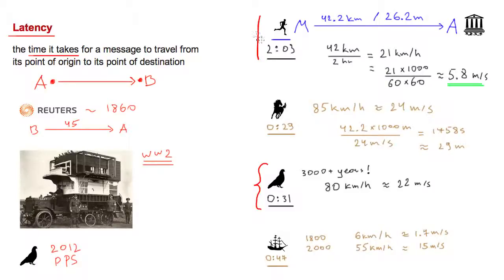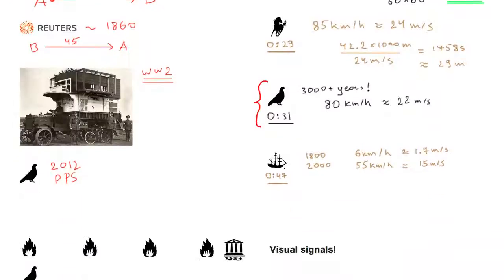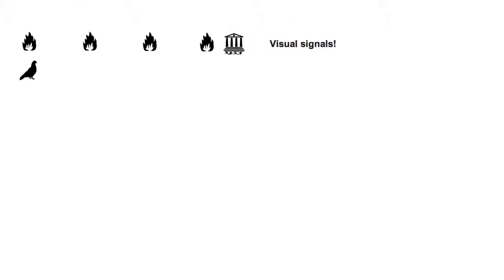There is one important way of delivering a message that we are missing from this picture: through the use of visual signals. This is an ancient and very popular method used for thousands of years through things like torches, fires, and smoke signals. In the case of the Battle of Marathon, we could have used visual signals to deliver the message.